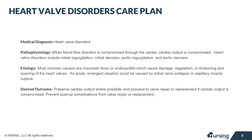Heart valve disorders occur when blood flow direction is compromised through the valves, which then causes cardiac output to be compromised. Heart valve disorders include mitral regurgitation, mitral stenosis, aortic regurgitation, and aortic stenosis. The most common causes are rheumatic fever or endocarditis, which cause damage, vegetations, or even thickening and scarring of the heart valves.